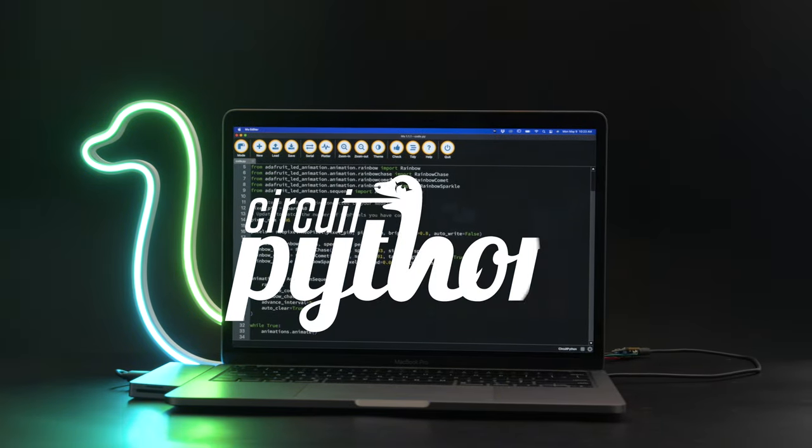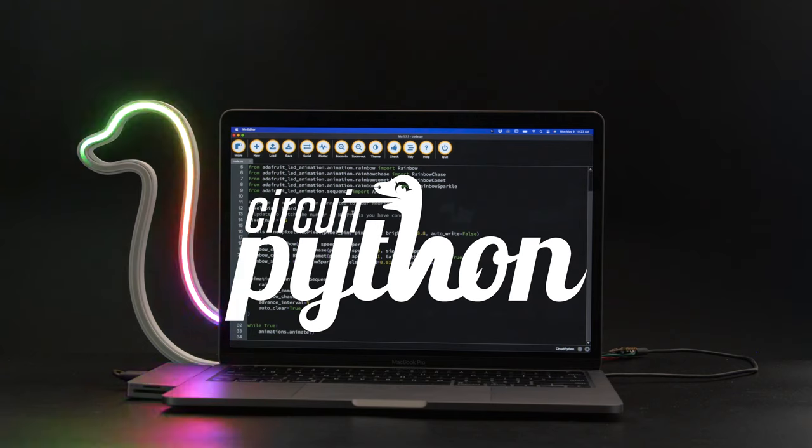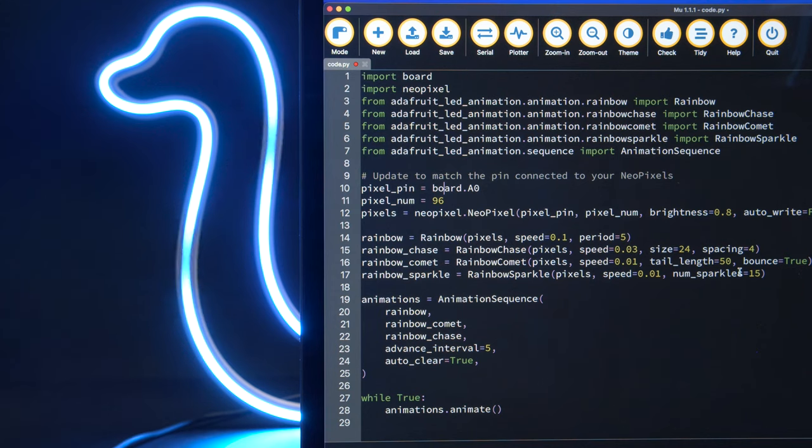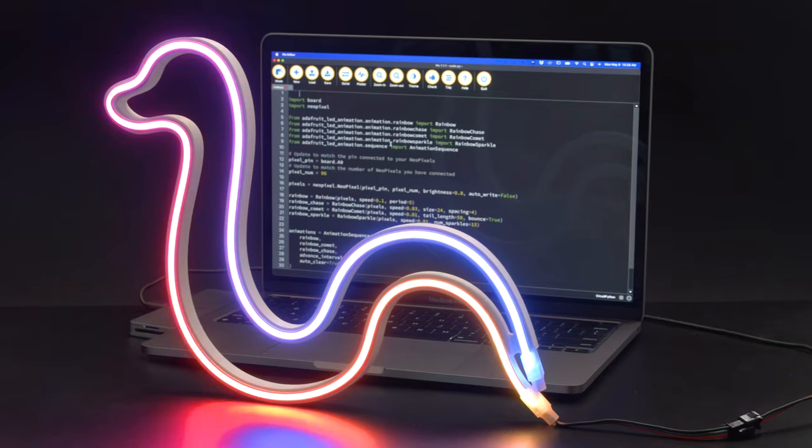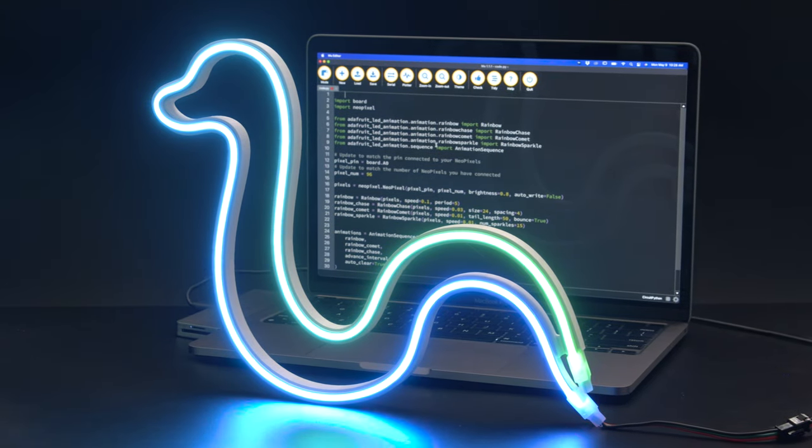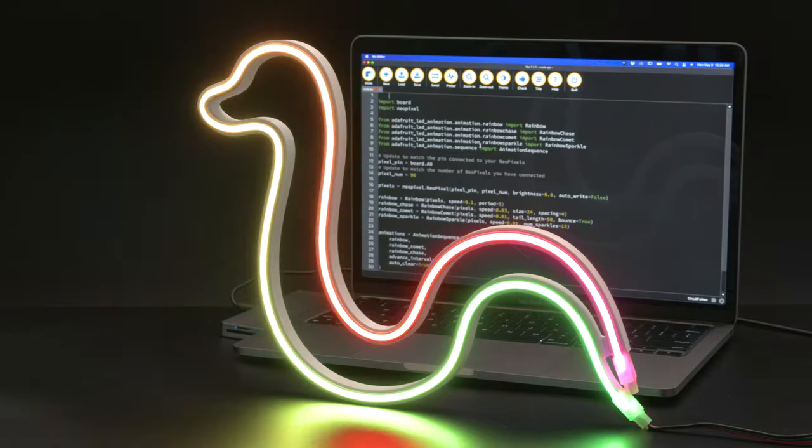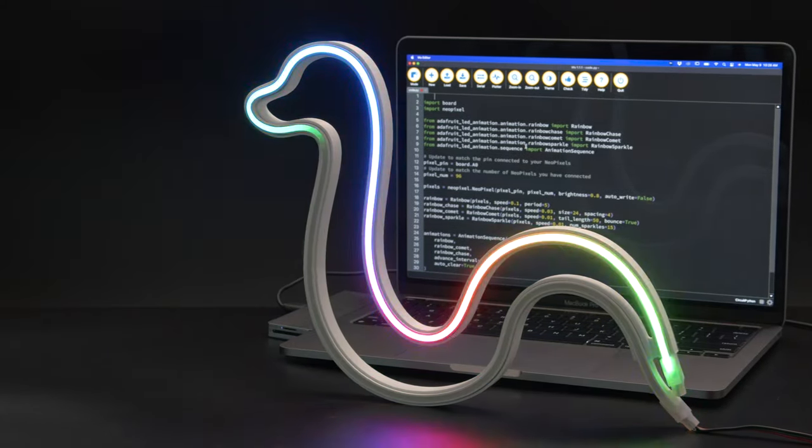Pair it with CircuitPython for easy to program LED animations. With the LED animation library you can string together several animations to make a sequence of custom colors and speeds. CircuitPython's ability to easily make changes without compiling or installing an IDE means you can get projects quickly up and glowing.